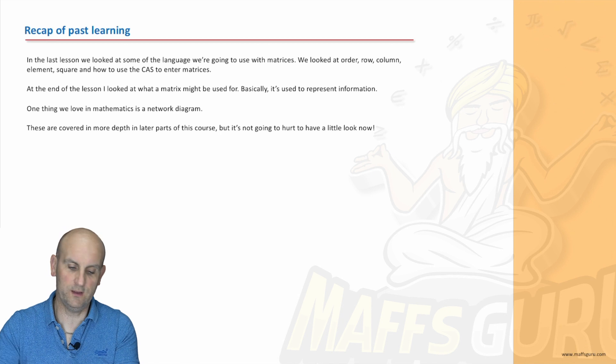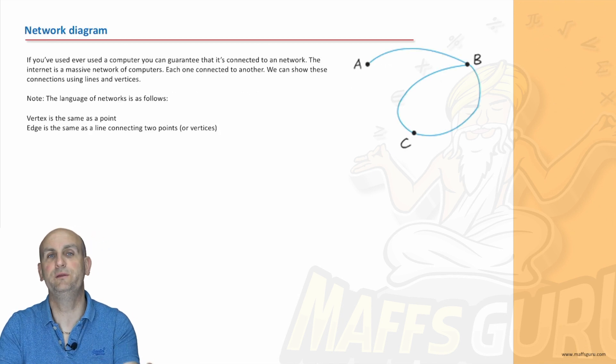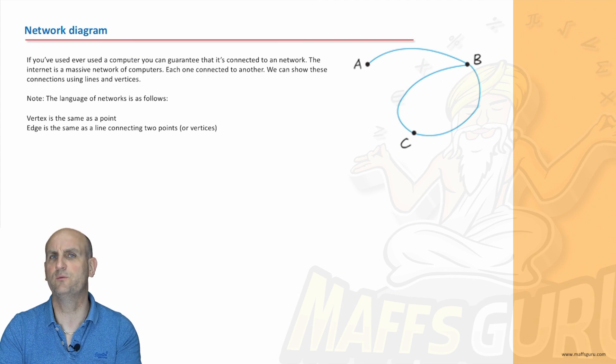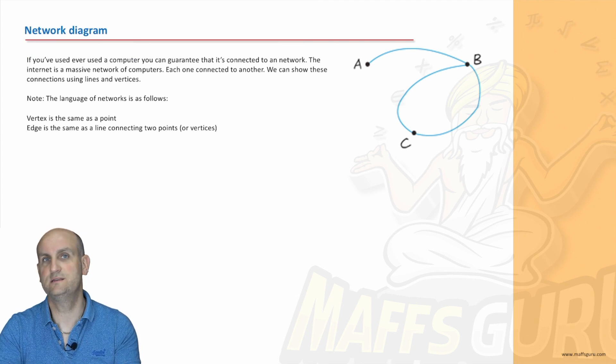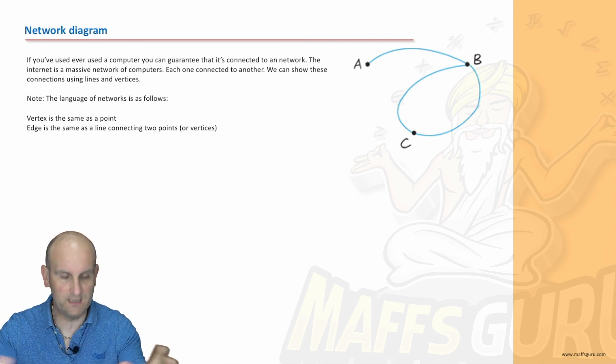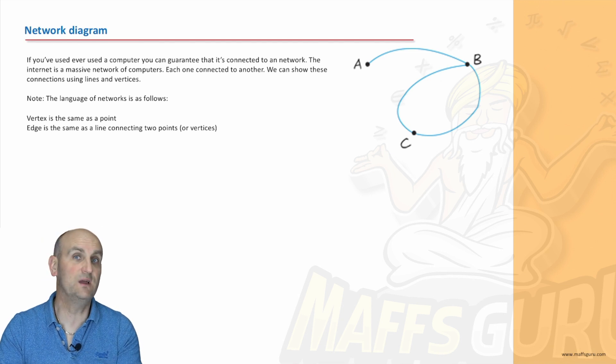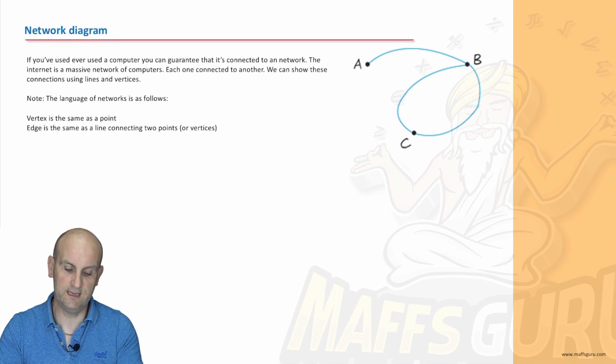Now what on earth is a network diagram? Here we go. This is an example of a network diagram and if you've used a computer and the chances are you're using one now to watch this video then it's connected to the internet which is a huge network. Alright and billions of devices connected and all of those connections. Now luckily we're not going to deal with billions of devices because that would be a fairly large matrix. We're just going to deal with three here.